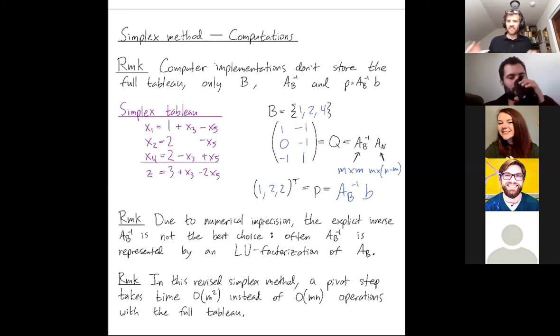So I'll call this the revised simplex method. You don't write down the tableau as we've been doing. You just only store these integral pieces that you need to recover the tableau to find the next pivot variables. So in this revised simplex method, you can run it faster. You only need M squared operations to do a pivot. M is the number of equations, the number of variables in our basis, instead of M times N operations, as we've been doing with the full tableau.